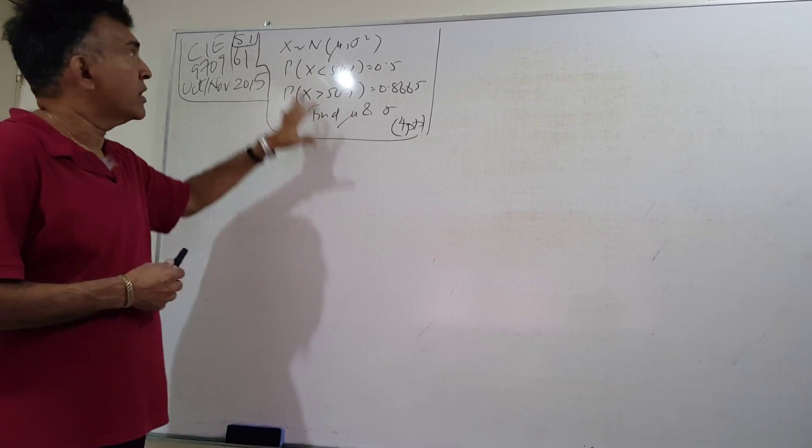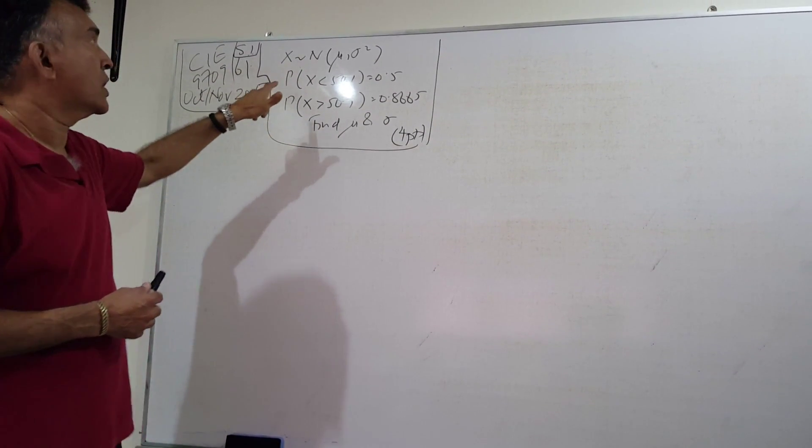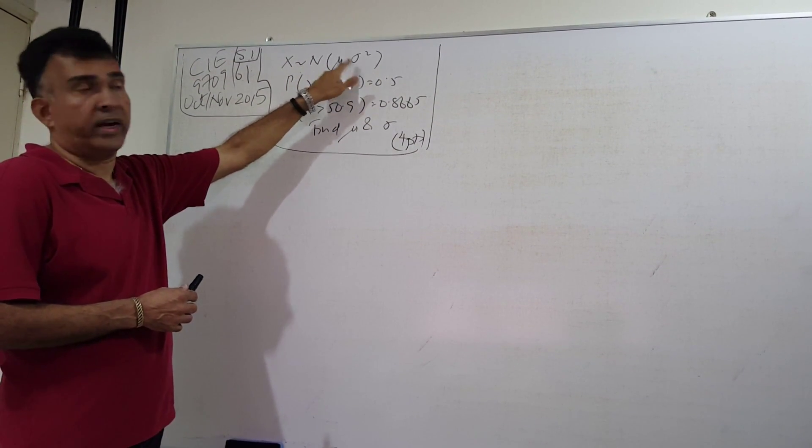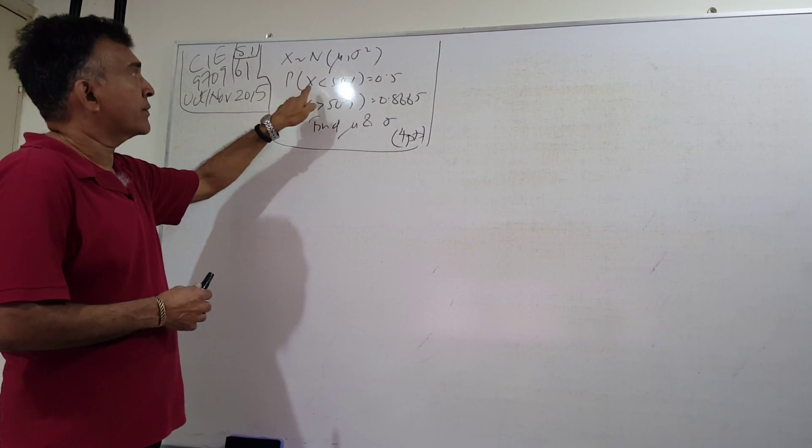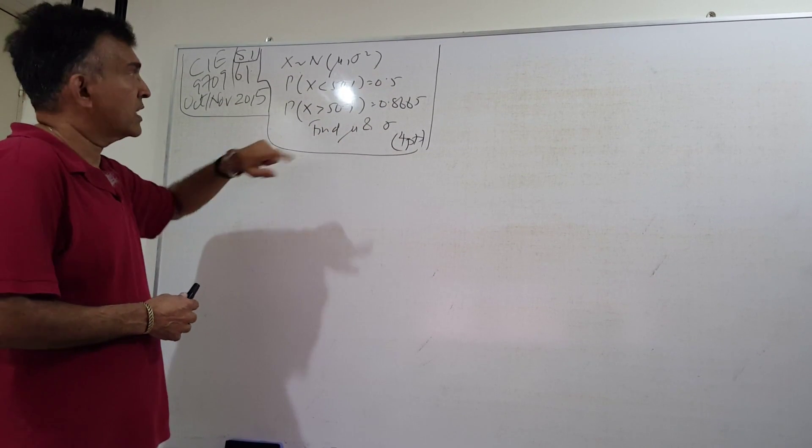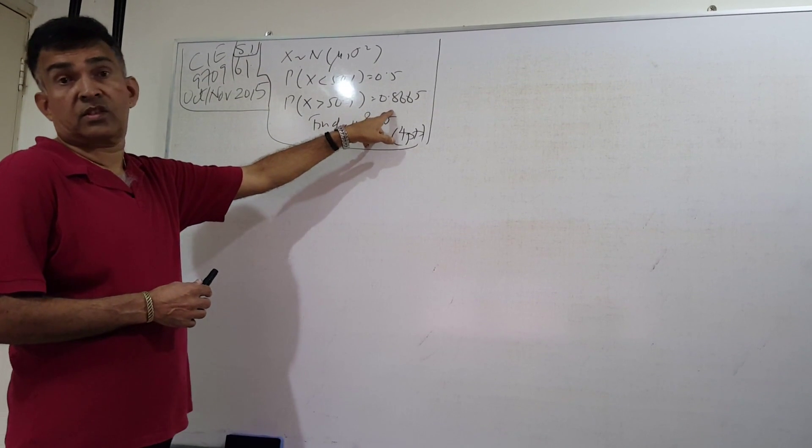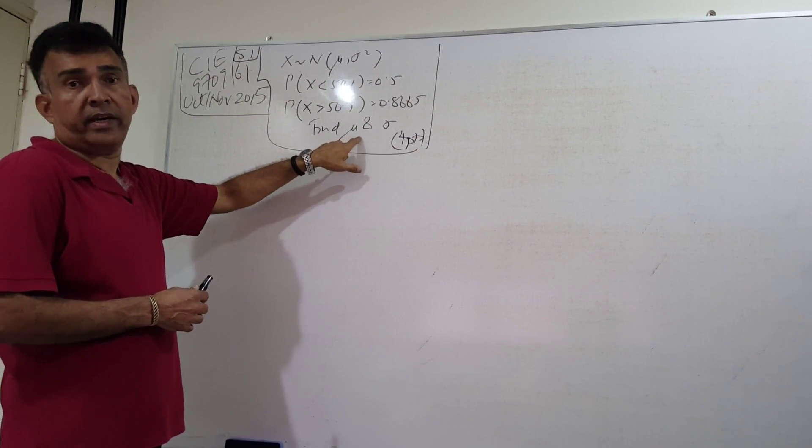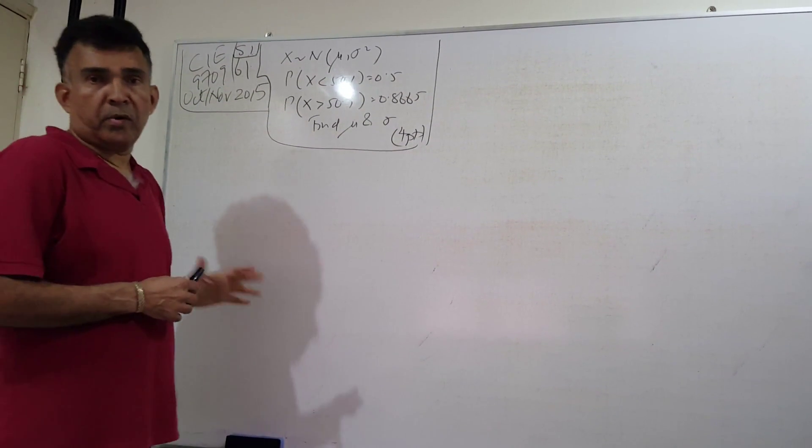We are given a random variable X that is normally distributed with mean μ and variance σ². They give us some information: the probability that X less than 54.1 is 0.5, and probability X bigger than 50.9 is 0.8665. You are asked to find μ and σ, pretty straightforward problem.